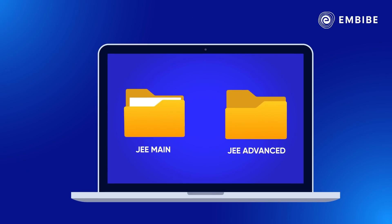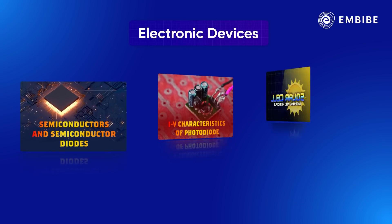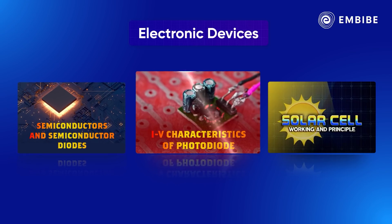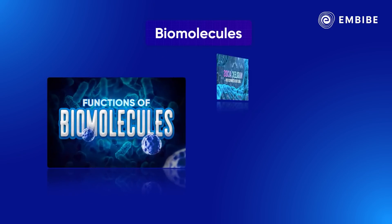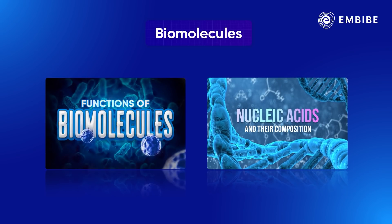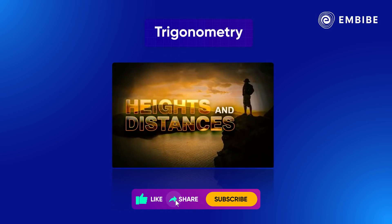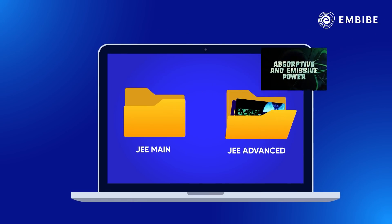Let's look at some examples of topics that are in JEE Main but not found in the JEE Advanced exam. Under electronic devices, we have semiconductors and semiconductor diodes, IV characteristics of photodiodes, and solar cells. Under biomolecules, we have functions of biomolecules and nucleic acids and their composition. Under trigonometry, heights and distances is in Main but not in Advanced.